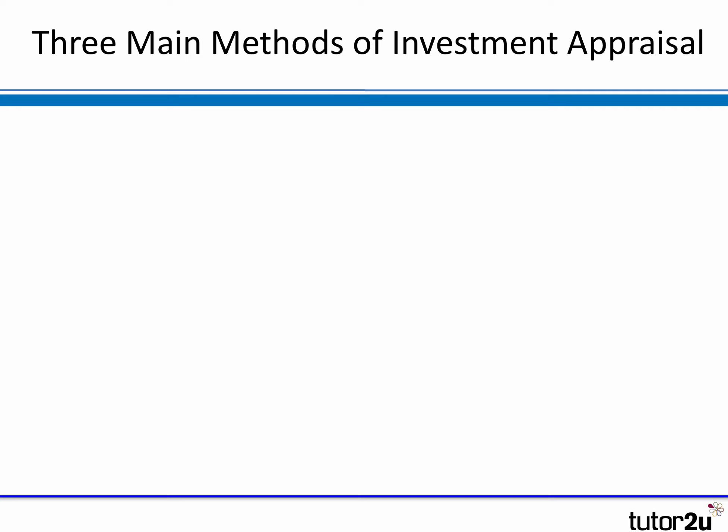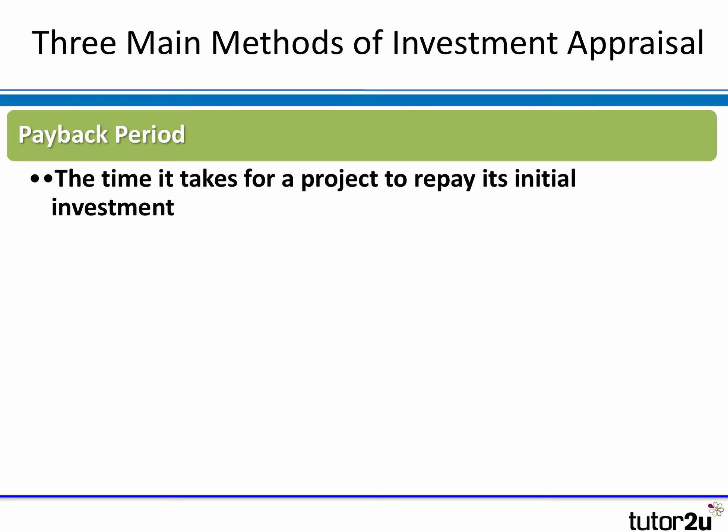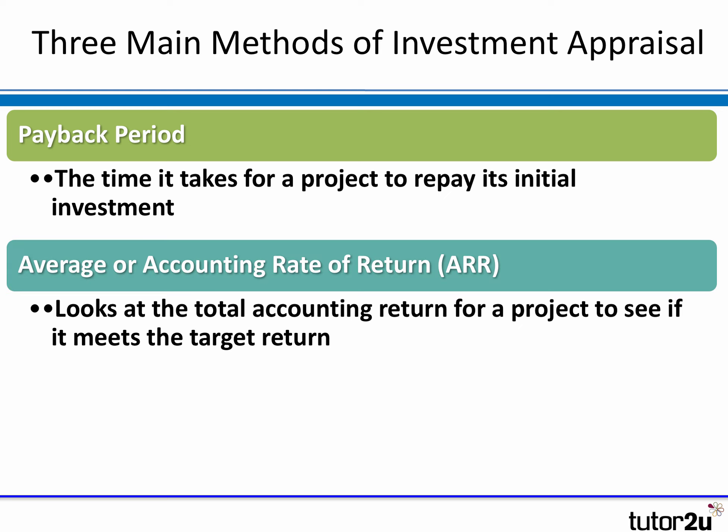The three main methods you need to be familiar with are: first, payback period — this measures in time the length of time it takes for a project to repay the initial investment and therefore ignores cash flows beyond that point. Second, the average or accounting rate of return, usually shortened to ARR — this is a percentage measure that looks at the accounting return on the project, compared against the target rate of return to see whether it's satisfactory.